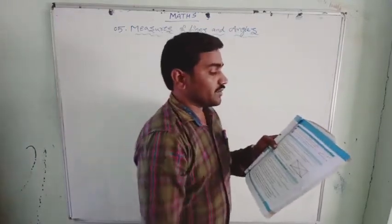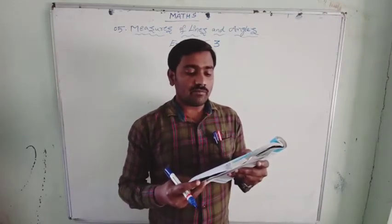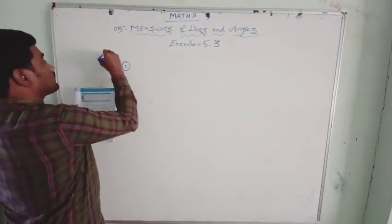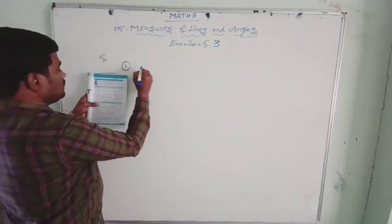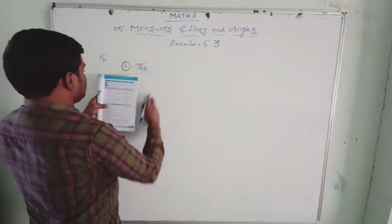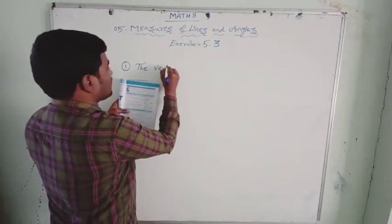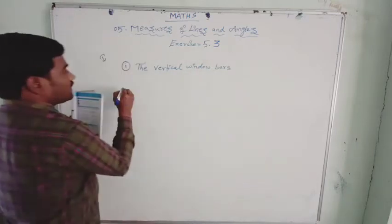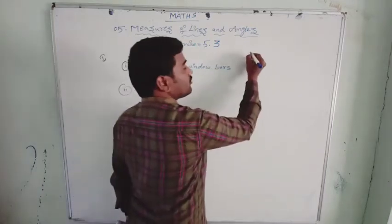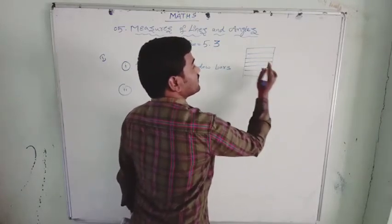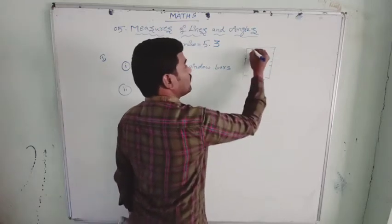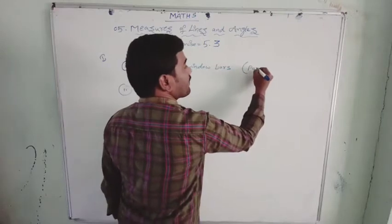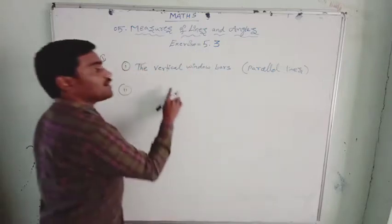So let's go to the first question: which of the following models represent parallel lines, which represent perpendicular lines, and which are neither of them? Here they have given several models and we have to identify which are parallel lines. The vertical window bars — for a window there are vertical window bars going vertically, and there are horizontal window bars. The vertical window bars are an example of parallel lines.